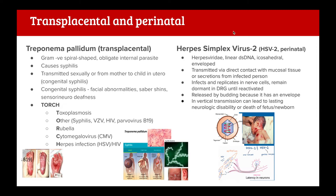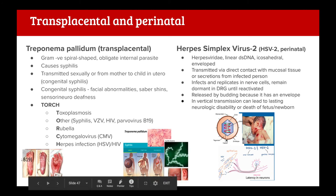Herpes simplex virus 2 (HSV-2) is genital herpes, while HSV-1 is oral herpes. It's a Herpesviridae linear dsDNA, icosahedral and enveloped virus. Transmitted via direct contact with mucosal tissue or secretions from an infected person - essentially an STI. It infects and replicates in nerve cells and can remain dormant in the dorsal root ganglion until reactivated. Because it's enveloped, it's released by budding rather than cell lysis. Vertical transmission can lead to lasting neurological disability or even death in the newborn.